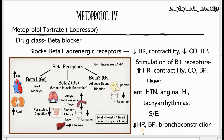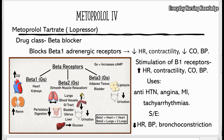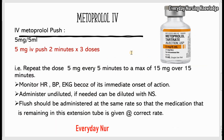Side effects to monitor for include low heart rate and low blood pressure. Remember, in higher doses it blocks beta-2 receptors. Beta-2 receptors in the lungs help with smooth muscle relaxation and bronchodilation, so when beta-2 is blocked it can lead to bronchoconstriction. Therefore, metoprolol is used with caution in patients with asthma and COPD.